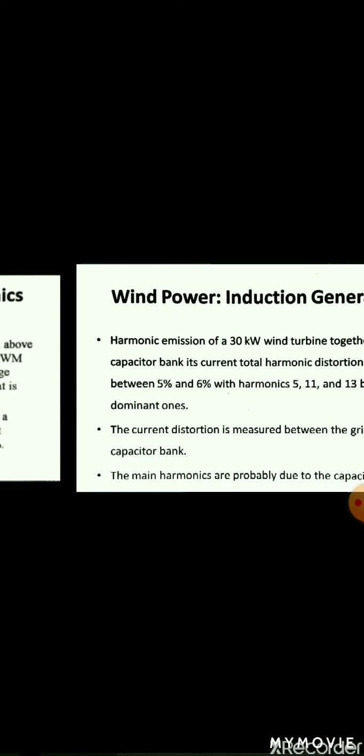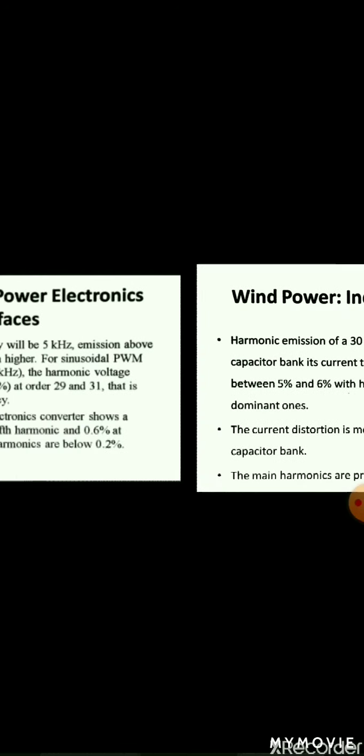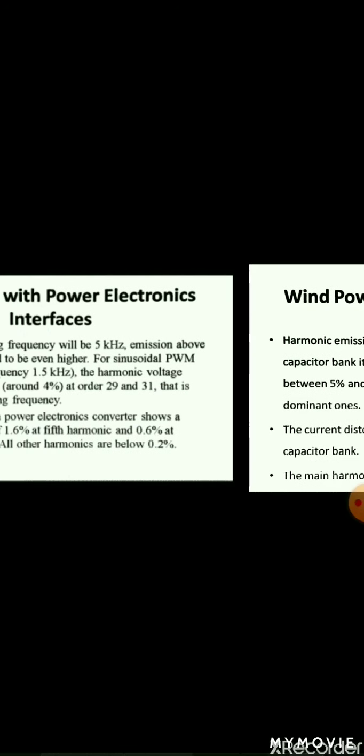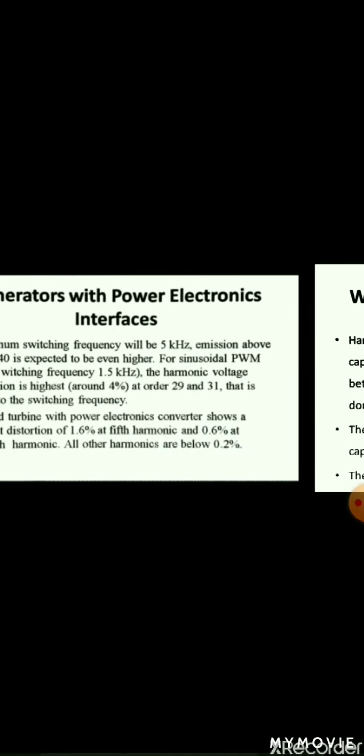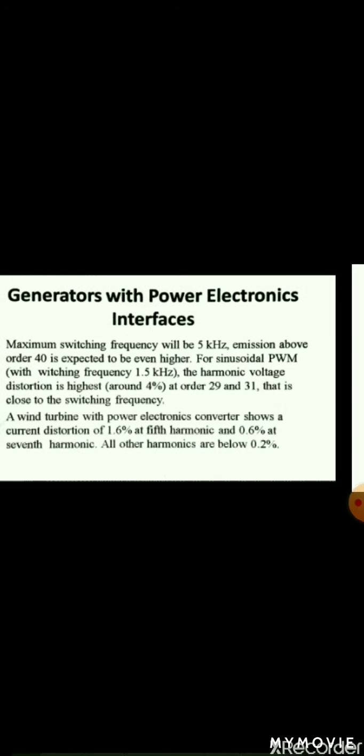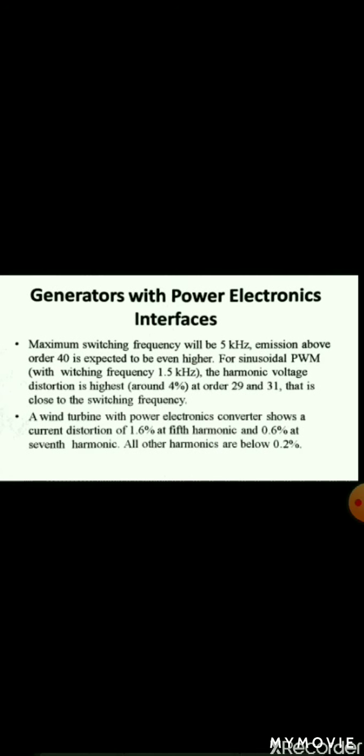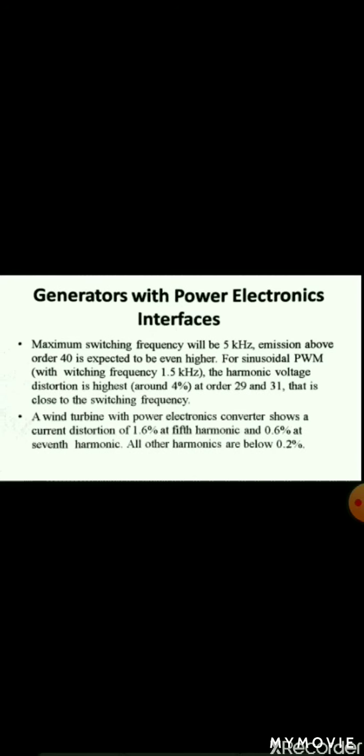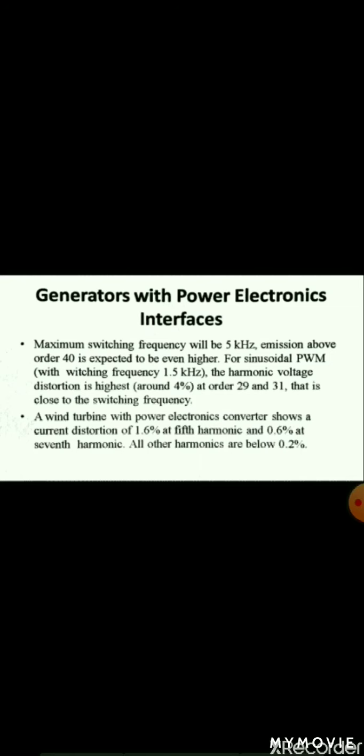The current distortion is measured between the grid and the capacitor bank. So the main harmonics will probably be due to the capacitor bank only. The harmonic voltage distortion was about 2.5% close to the capacitor bank, with the 5th harmonic being by far the dominant component.